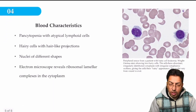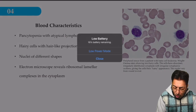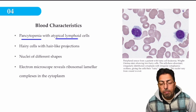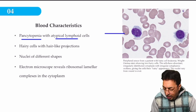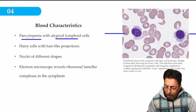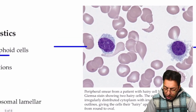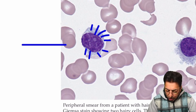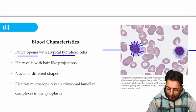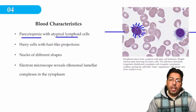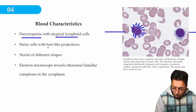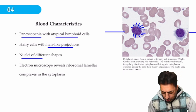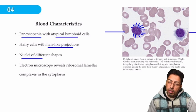The blood values show that all lineages may be affected — pancytopenia with atypical lymphoid cells. This is a classic image-based question showing hairy cells with peripheral cytoplasmic projections, which give the cells their hairy appearance. Hairy cells have hair-like projections, and there is anisocytosis with nuclei of different sizes and shapes. This is how hairy cell leukemia may be presented in the form of an image-based question.